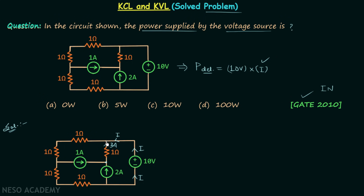At this node we again have current division because 3 elements are connected here, making it a principal node. According to KCL, the leaving current will be equal to 3 ampere plus I, because these two are the entering currents. So we have I plus 3 current in this branch.